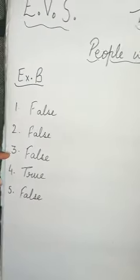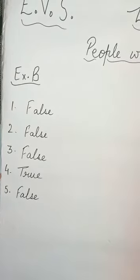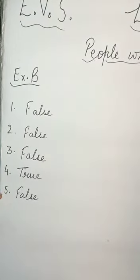So 1, 2, 3 are false. Number 4 is true. And number 5 again false. So that's it children.